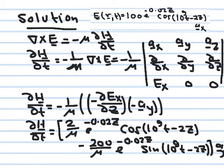Differentiating e^(−0.02z) gives minus 0.02 multiplied by 100 e^(−0.02z), which yields 2 e^(−0.02z). The two negatives cancel, so this part becomes positive. Then differentiating the cosine gives minus sine, and differentiating the angle minus 2z gives minus 2, so this part contributes minus 2 × 100 = minus 200. We get minus 200 e^(−0.02z) sine(10^9 t minus 2z).